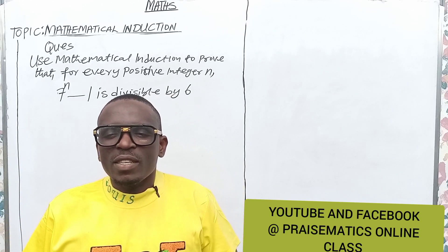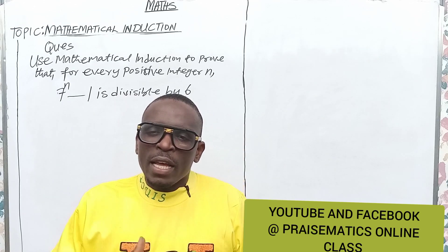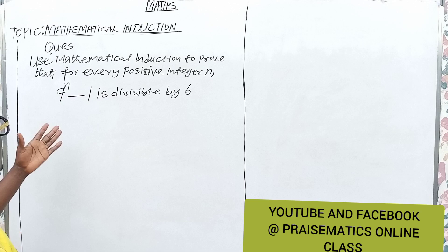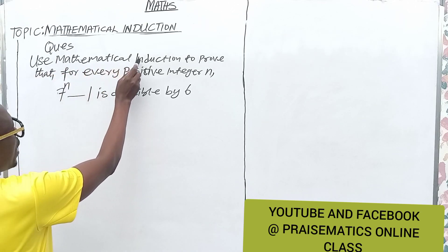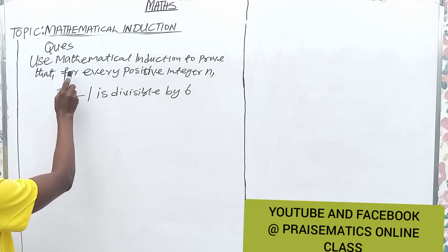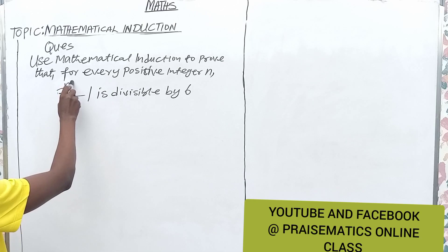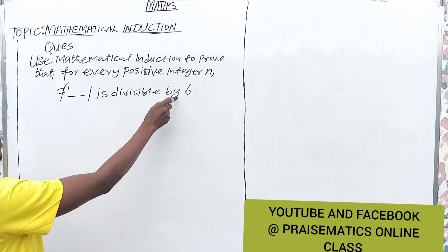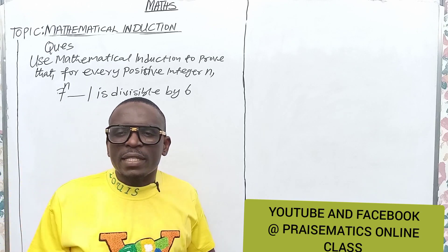Hello friends, welcome to Prismatics Online Class. In today's class, we are going to solve a question on the board. The question says: use mathematical induction to prove that for every positive integer n, 7 raised to the power n minus 1 is divisible by 6. Let's start the solution.